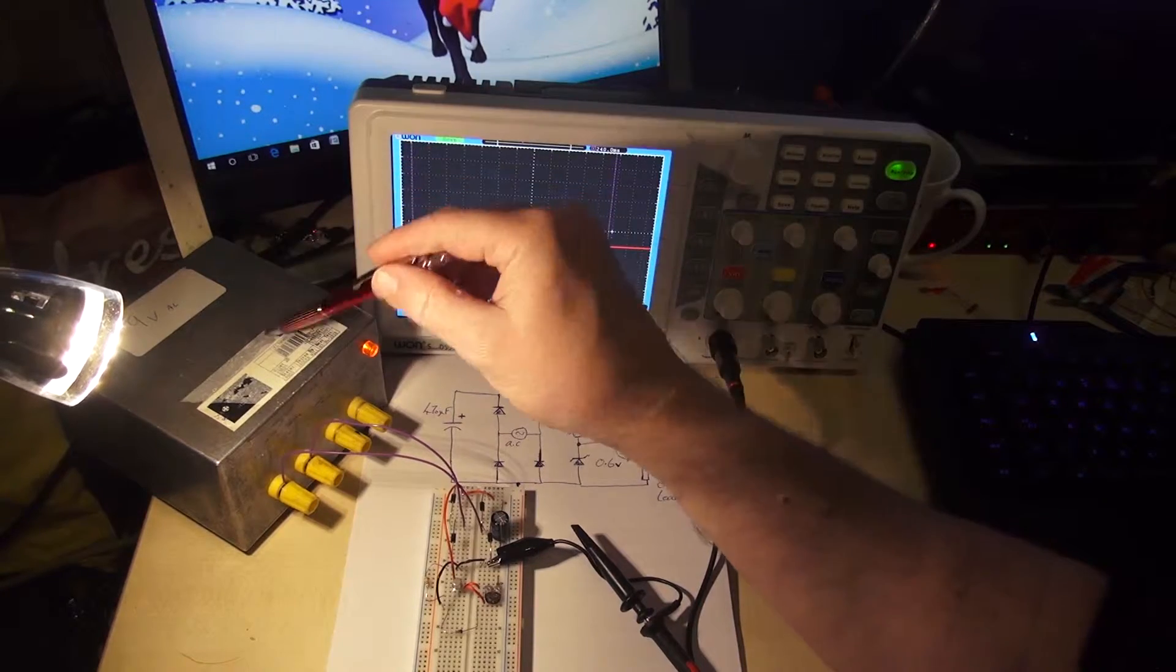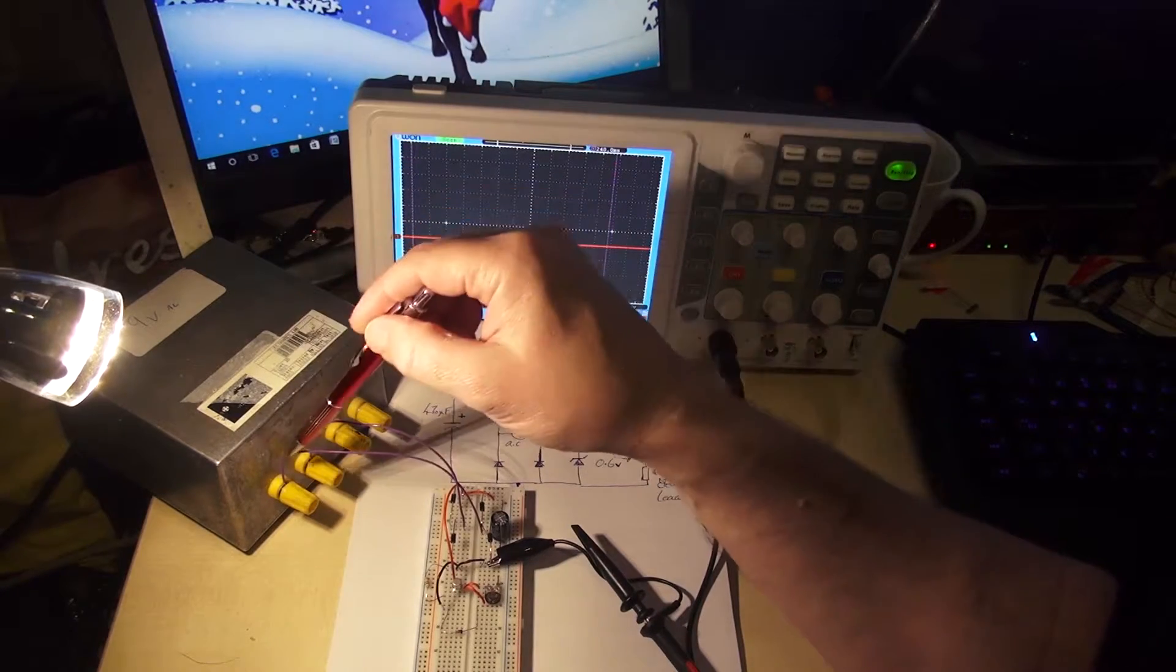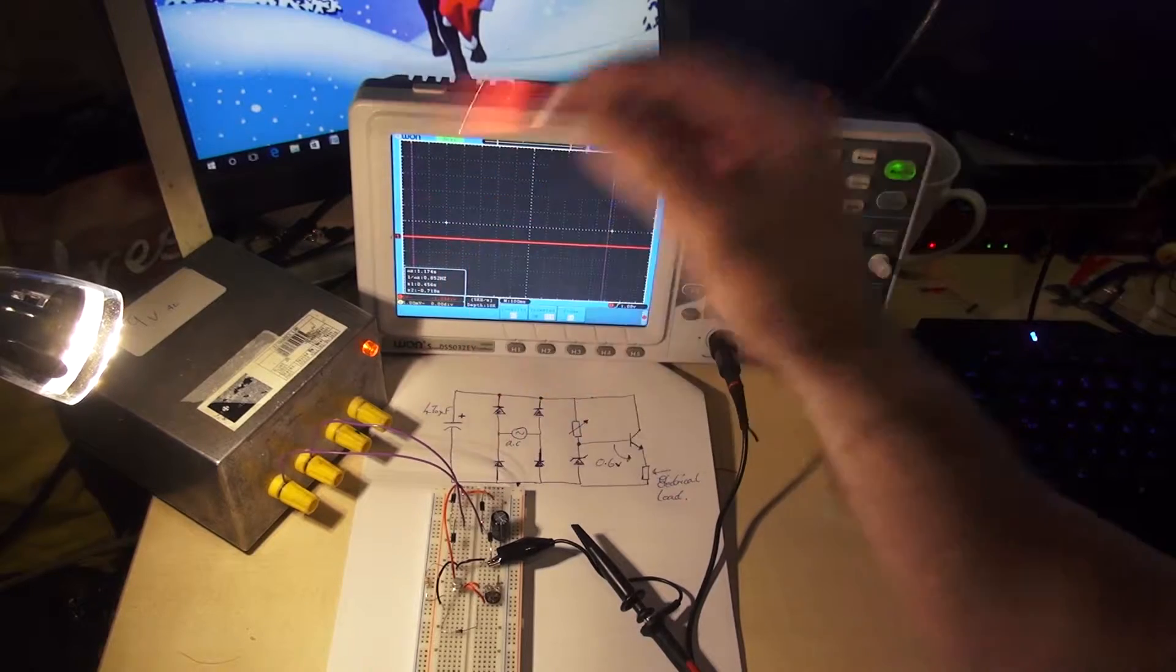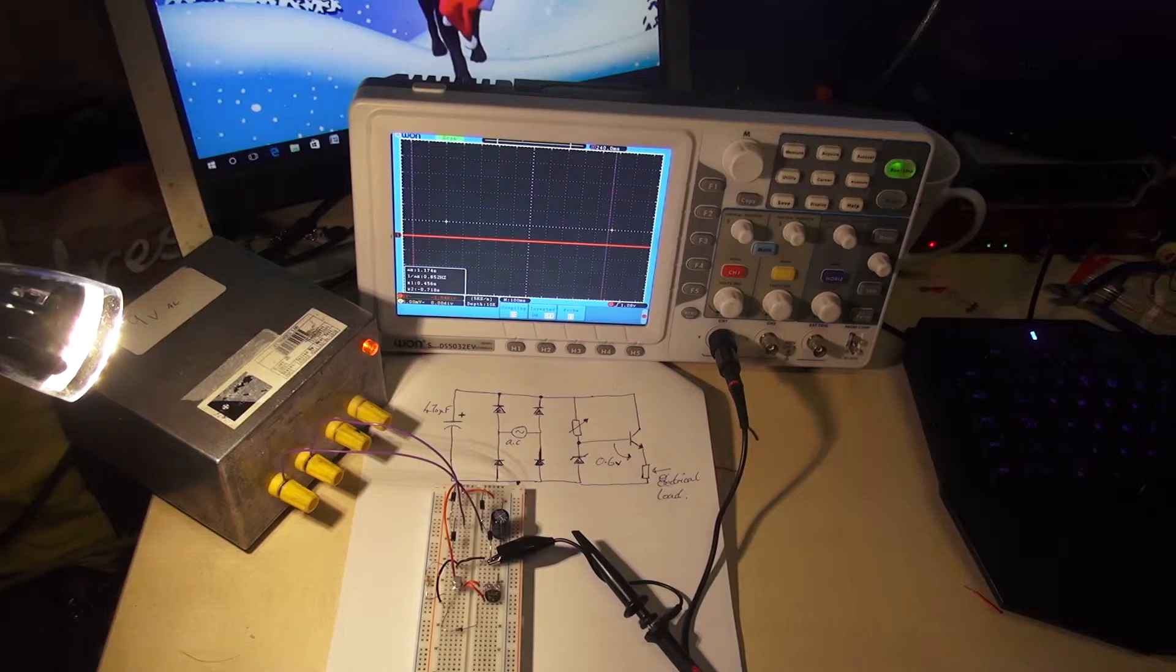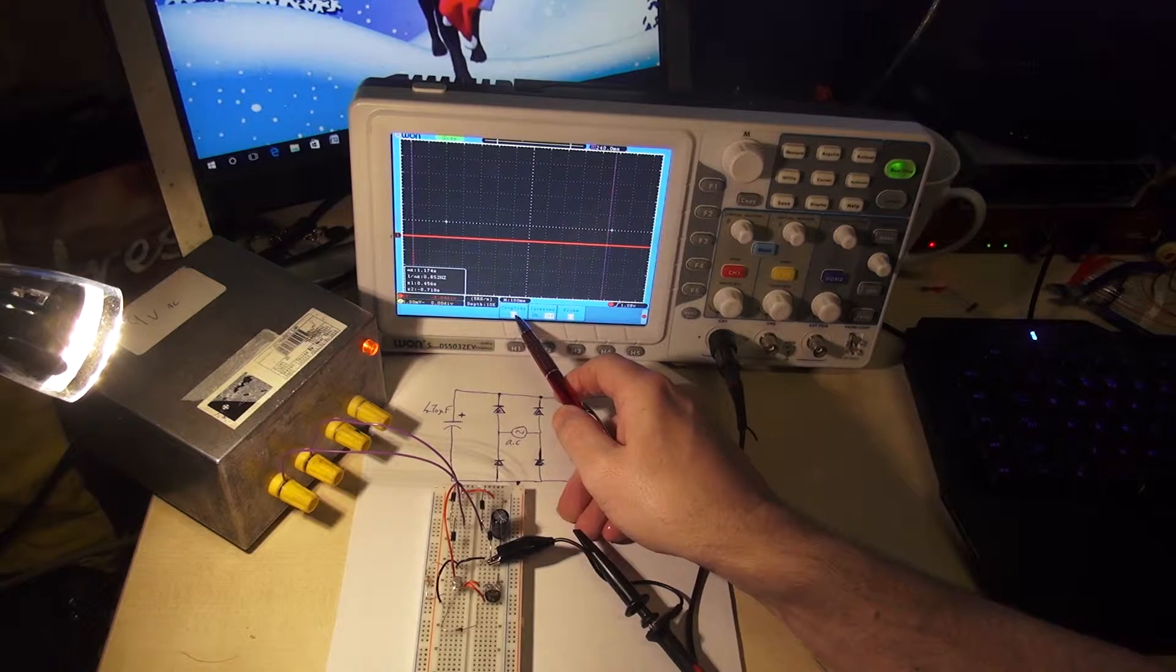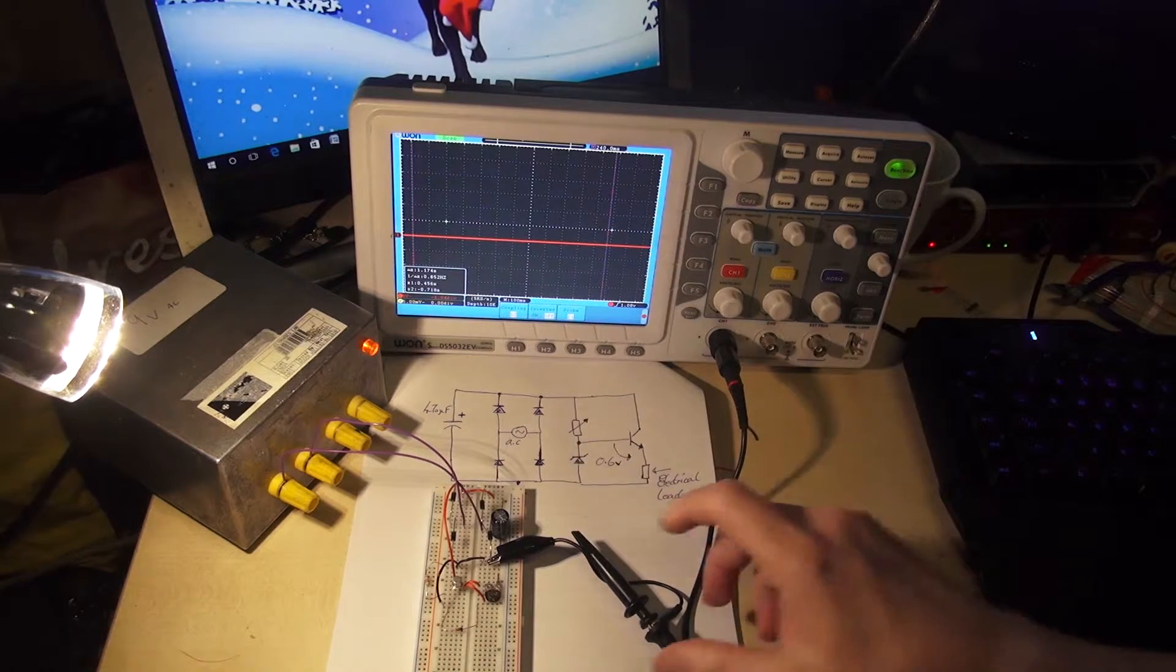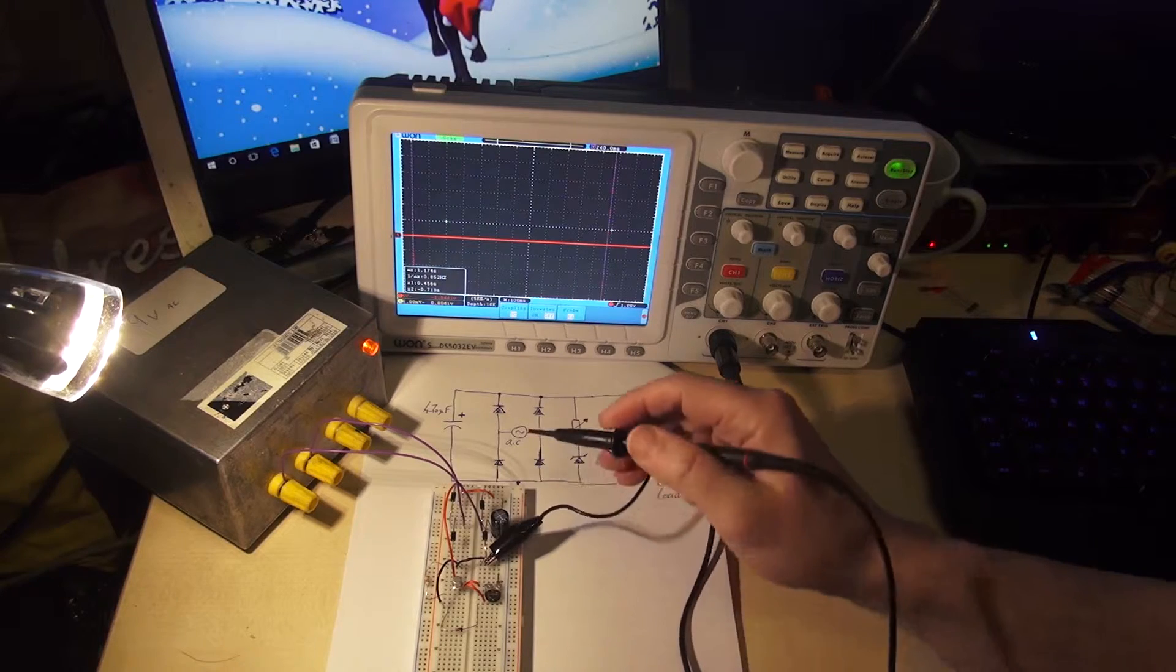We've got an AC supply, that's the AC supply going into the circuit, and I've got an oscilloscope set up here. The coupling is DC, just to do a couple of tests really.